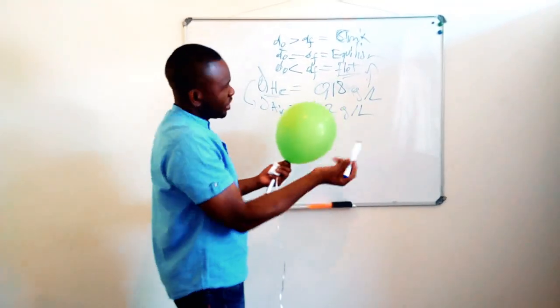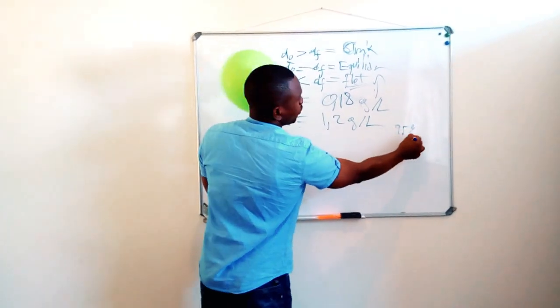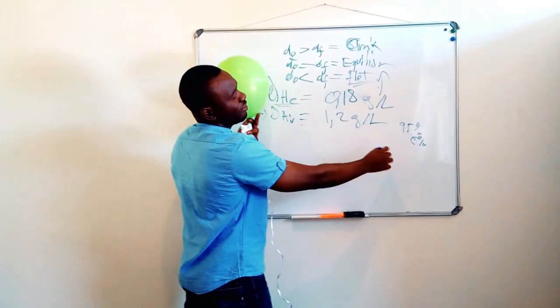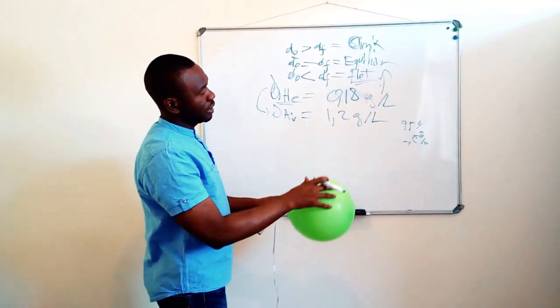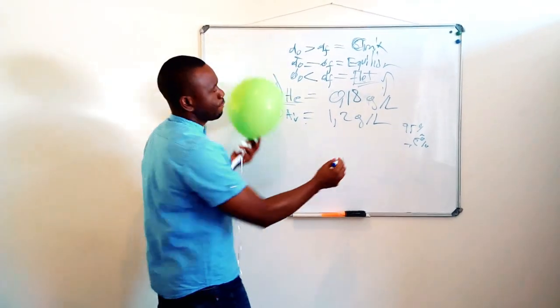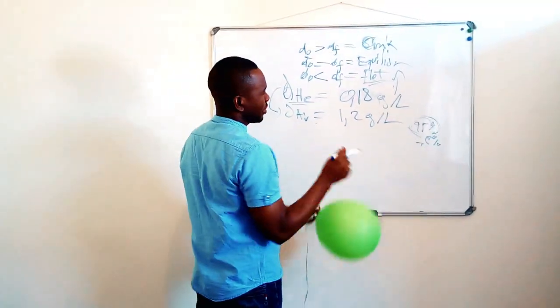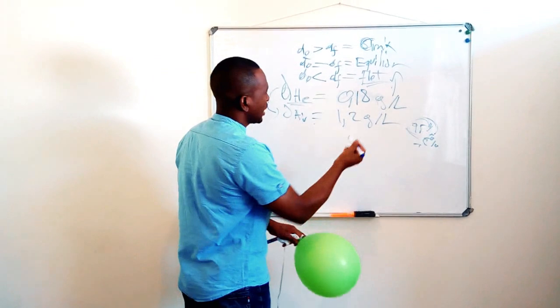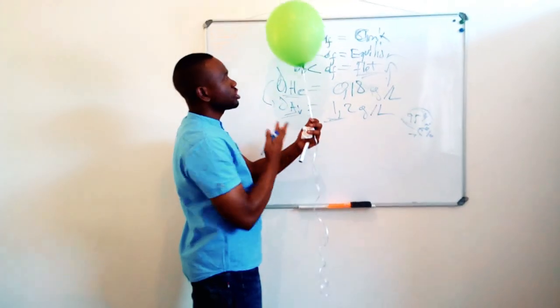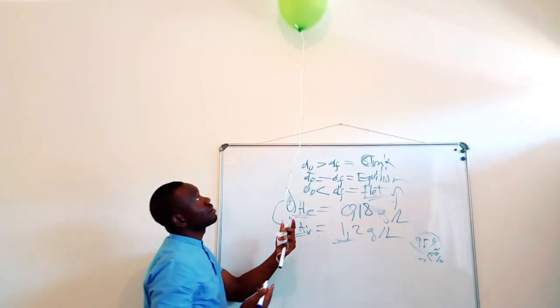This balloon here has somewhere above 95% which is helium, and somewhere between 5% which is the density of the plastic body of the balloon. Helium has a higher percentage. At the end, air, given that air has a higher density, puts a force on the balloon, which in return makes the balloon float or go higher.